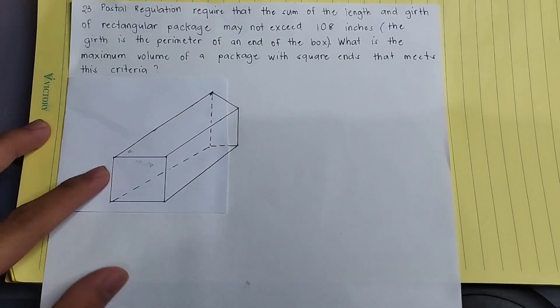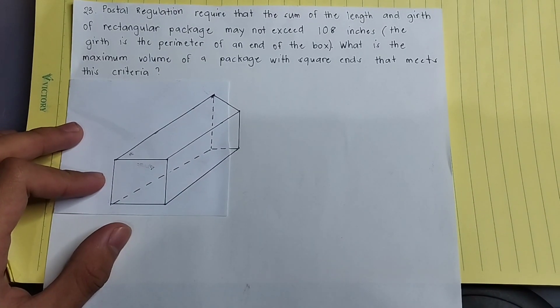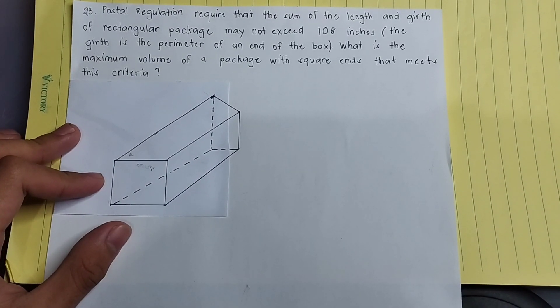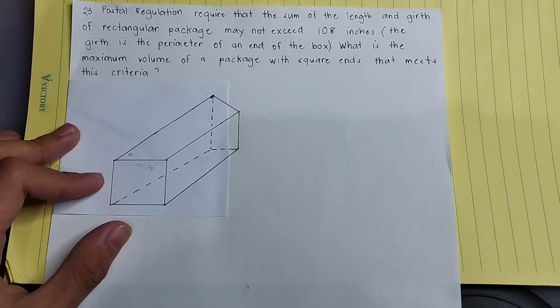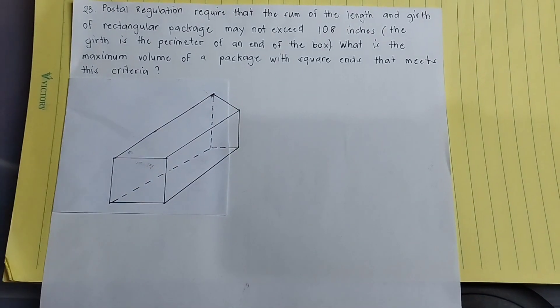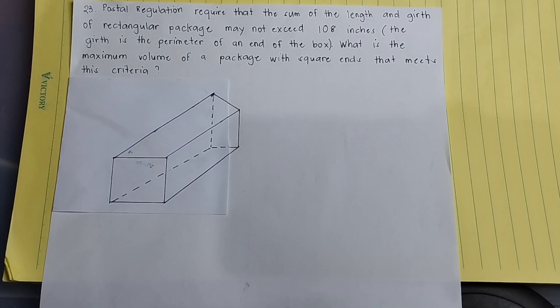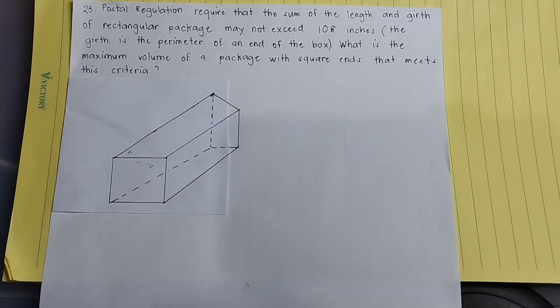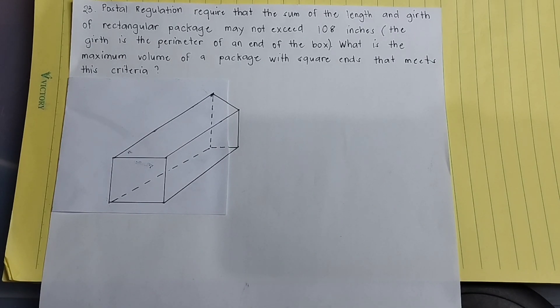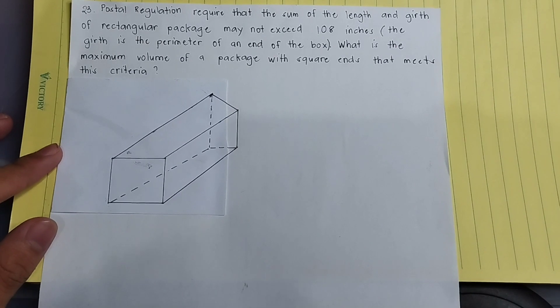So the problem is: postal regulation requires that the sum of the length and girth of a rectangular package may not exceed 108 inches. The girth is the perimeter of an end of the box.